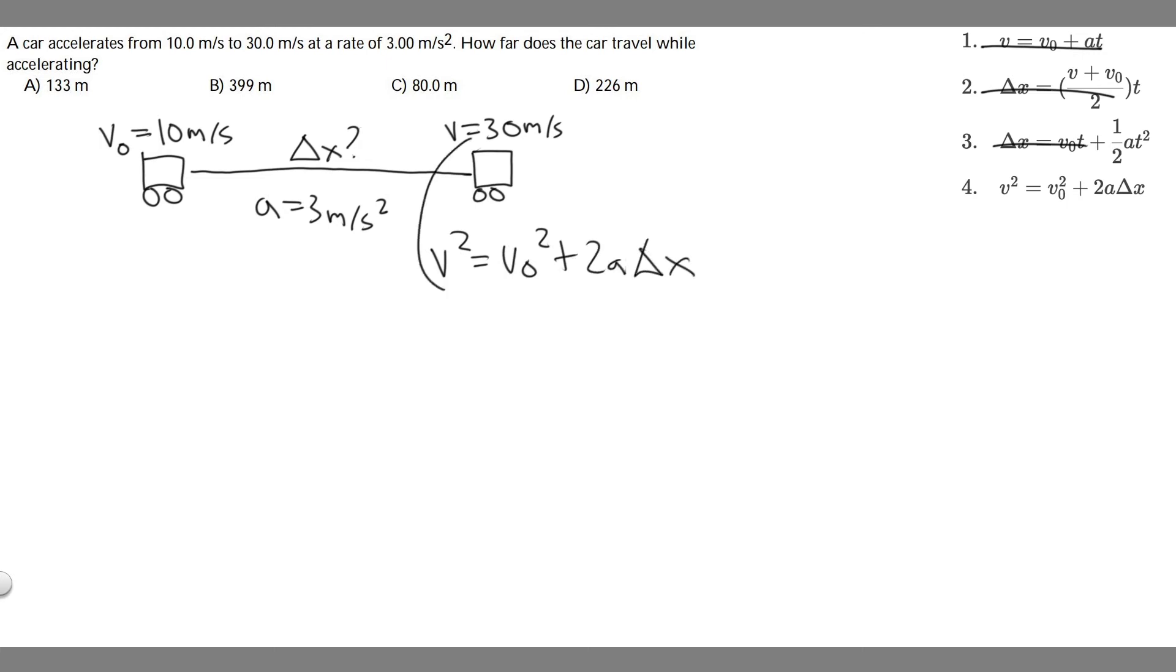And if you look here, we have v, we have a, and we have v sub 0. And the only variable left is delta x, which is how far it's going to travel. And we just have to solve for it by plugging in the variables.